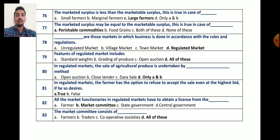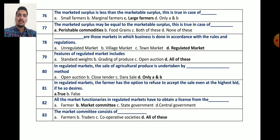Question number 82: all the market functionaries in regulated market have to obtain a license from — farmer, market committee, state government, or central government? The correct answer is market committee. All market functionaries in the regulated market have to obtain a license from the market committee.